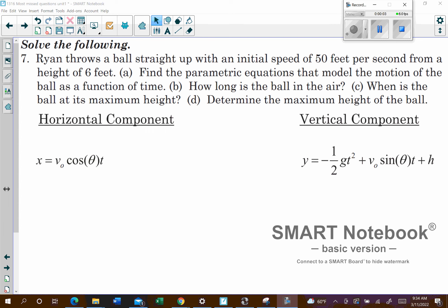Okay, so on this problem number seven, Ryan throws the ball straight up with an initial speed of 50 feet per second from a height of 6 feet.